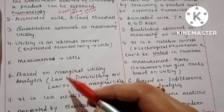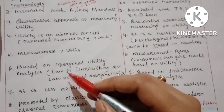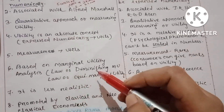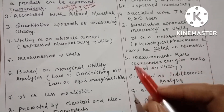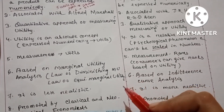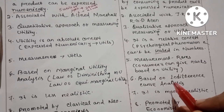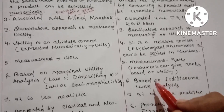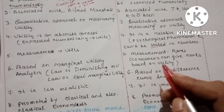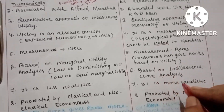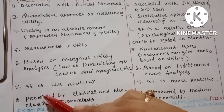Cardinal utility is based on marginal utility analysis. Examples of cardinal utility analysis include the law of diminishing marginal utility and the law of equi-marginal utility. Ordinal utility analysis is based on indifference curve analysis.